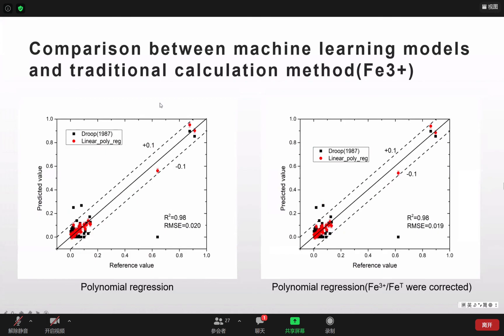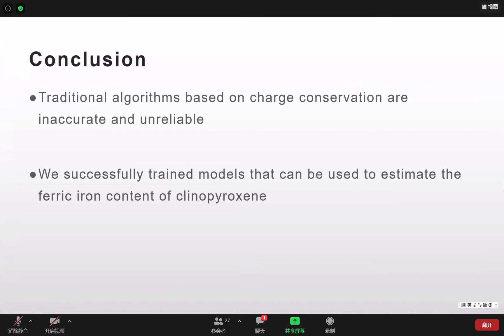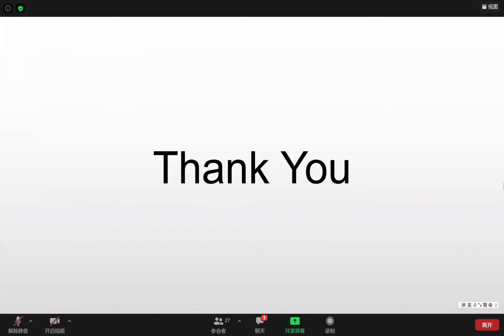Also, we predict the contents of the ferric ions and it shows a great one-to-one line. This is my conclusion. The traditional methods based on the charge conservation are inaccurate and unreliable. We successfully trained the models that can be used to estimate the ferric ion contents of the CPX. That's all. Thank you.